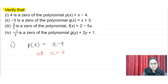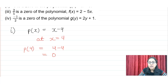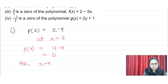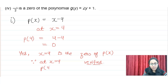At x equal to 4, we substitute into p(x). We get 4 minus 4 which equals 0. Since p(4) equals 0, we can say yes — x equal to 4 is the zero of p(x). This is how we verify. Since at x equal to 4, p(4) is 0, therefore x equal to 4 is the zero of p(x).